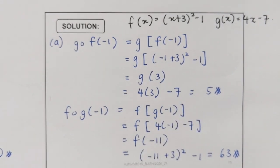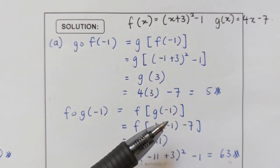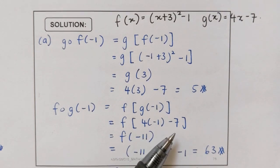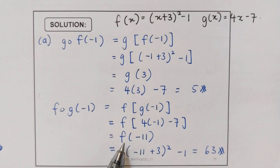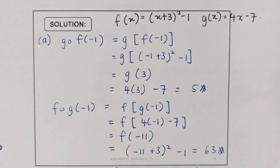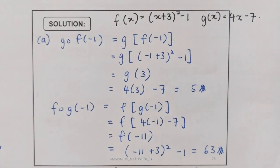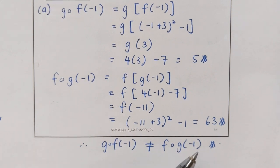Now we need to find f(g(−1)) to compare. This will be f(g(−1)). We substitute −1 into our function g: 4 times (−1) minus 7. We simplify in the bracket and get −11. So next we substitute −11 into our function f: (−11 plus 3) squared minus 1. You should get 63. Now you can compare between these two composite functions and see that g(f(−1)) is not equal to f(g(−1)).